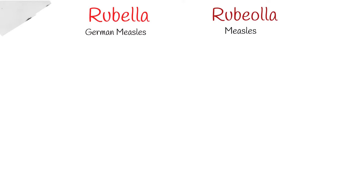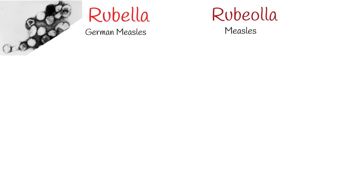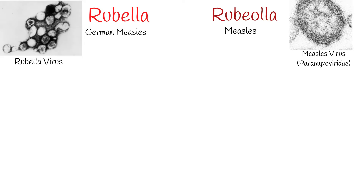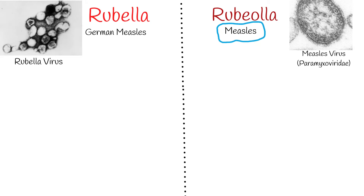Rubella and rubeola are two different diseases which have some similarities but also important differences. Rubella, also known as German measles, is an infection by the rubella virus. While rubeola is caused by a different virus in the paramyxoviridae family. It is also often referred to as simply measles.